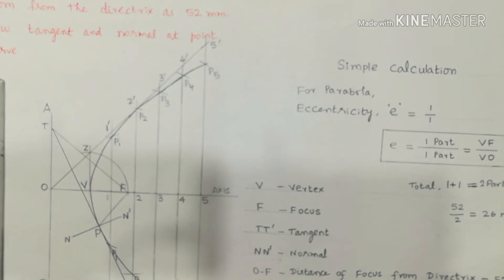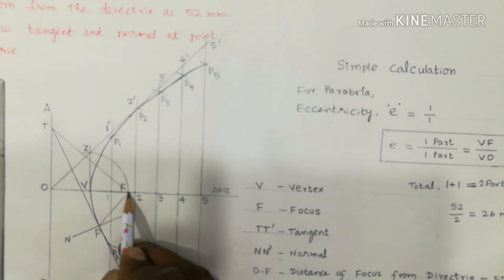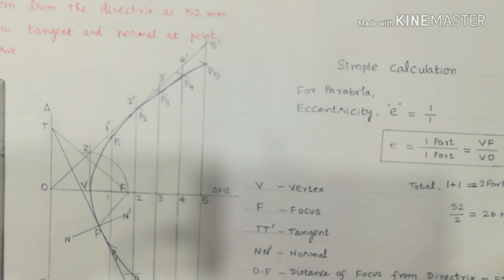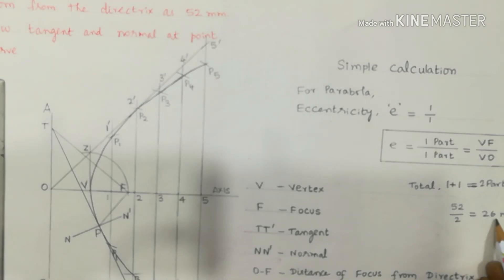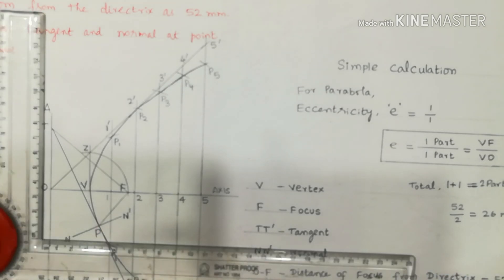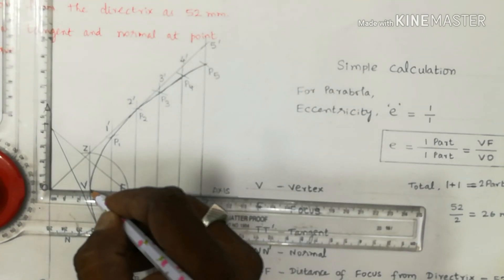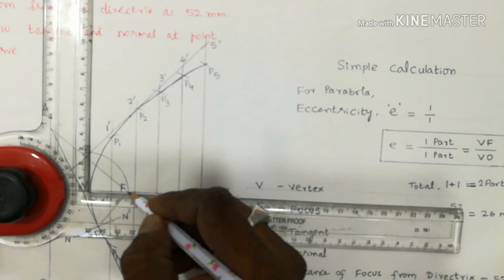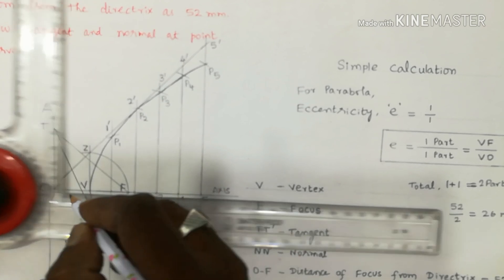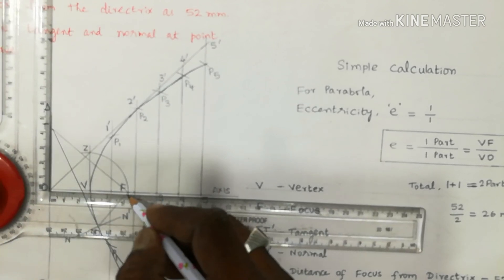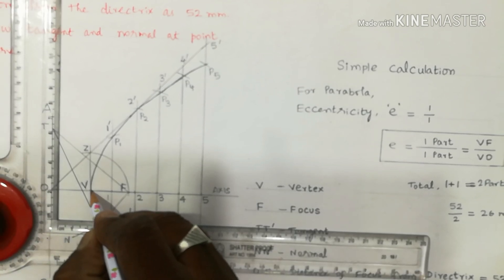The distance of focus from the directrix is 52 mm, that is 5.2 cm. Mark point F on the axis such that OF equals 52 mm. Then, 52 divided by 2 equals 26 mm, that is 2.6 cm. So the distance VO is 2.6 cm and VF is 2.6 cm, giving the vertex point V at the center.